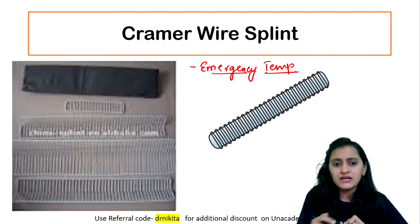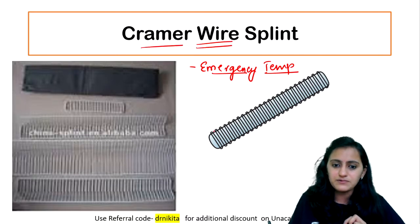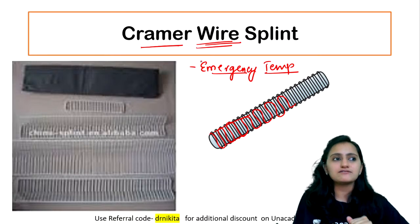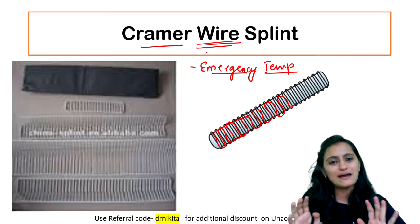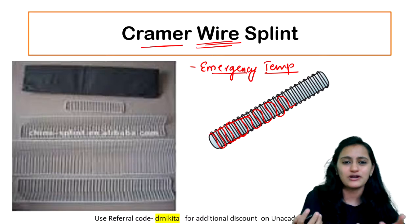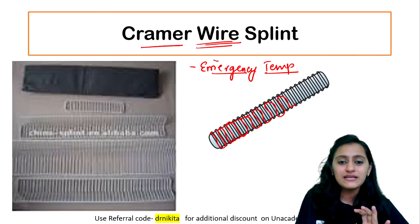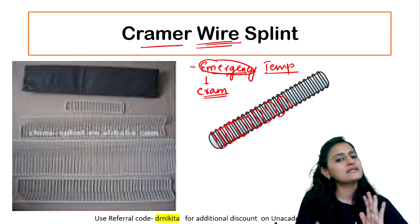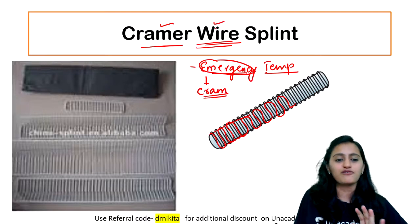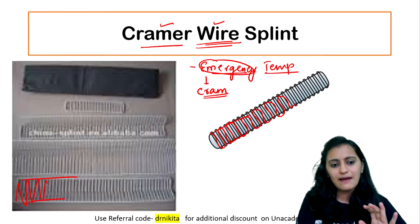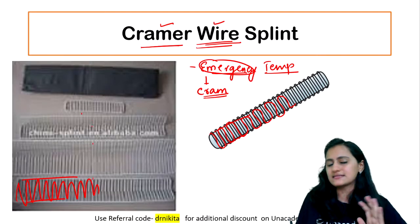Now how do we remember this? You can see it's a wire which is crammed up — there are two bars and you can see the wire crammed up in between the two bars. And when do we cram? Suppose I tell you suddenly that you have your NEET PG exam tomorrow — you start panicking and you start cramming up whatever you have to read. So what do we do in emergency conditions? We just start cramming up. So cramming is done in emergency. Cramer wire splint is used for emergency immobilization. You have two bars and the crammed wires in between the two bars in various sizes.